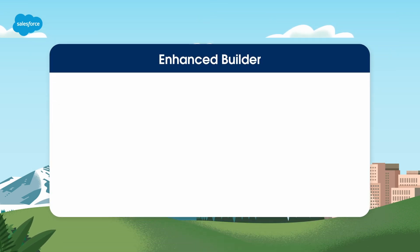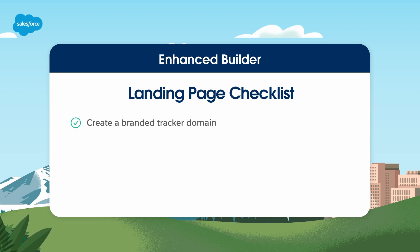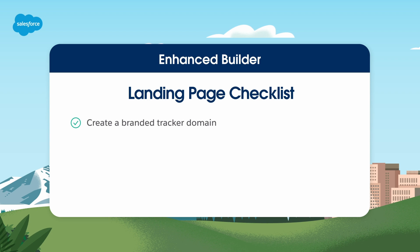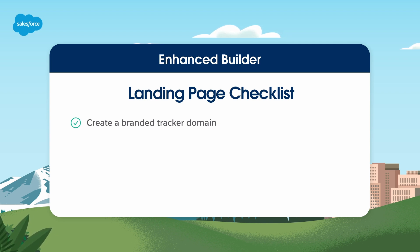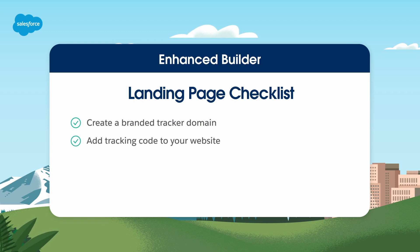Before diving in, let's review a brief checklist to ensure your Marketing Cloud Account Engagement account and website are technically prepared to support your landing pages. First, create a branded tracker displaying your company's name in the landing page URL instead of a generic Marketing Cloud Account Engagement address. This enhances the customer experience and is essential if you're using first-party tracking. Next, for insights into your prospects' post-landing page activities, add tracking code to other pages they're likely to visit or be redirected to after engaging with your landing page.